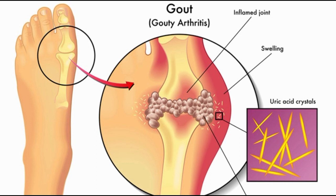Gout is the buildup of sharp crystals of uric acid in joints, which results in joint pain. When the body breaks down purines in foods, it produces a byproduct called uric acid.